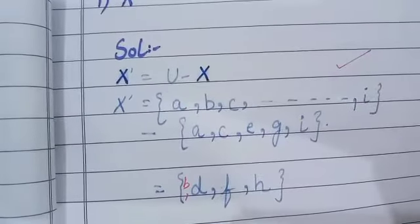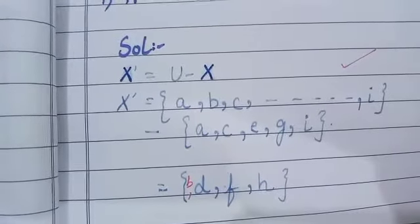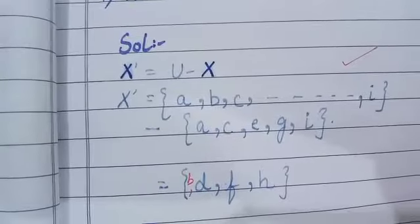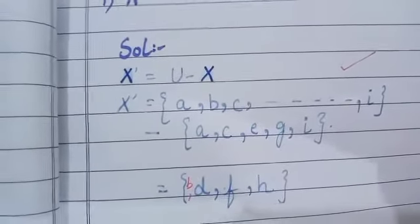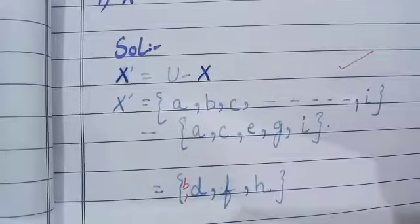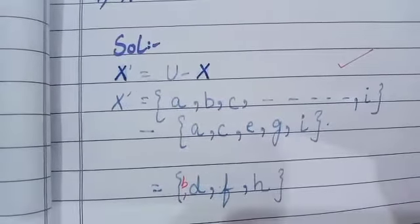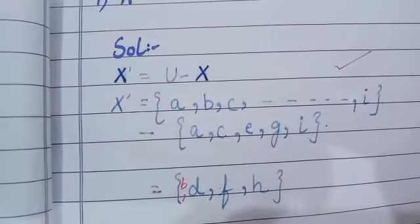These are the elements of the universal set, but these are not part of the X set. So this is the complement set of X that we find by its difference with the universal set.